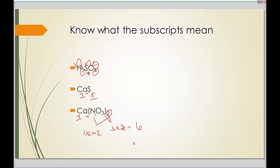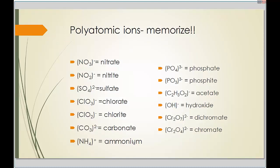You need to memorize the polyatomic ions: nitrate, nitrite, sulfate, chlorine and chloride, carbonate, ammonium, phosphate and phosphite, acetate, hydroxide, dichromate and chromate. Notice the pattern: going from ate to ite, the chemical formulas are the same except for the number of oxygens. As you remove an oxygen, it goes from ate to ite. The same is true for the other pairs.